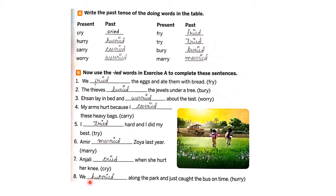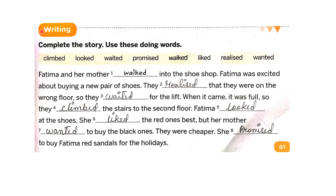Number eight: we ___ along the park and just caught the bus on time — 'hurry,' so we write 'hurried.' Now let's read the completed sentences: one, we fried the eggs and ate them with bread; two, the thieves buried the jewels under a tree; three, Ishan lay in bed and worried about the test; four, my arms hurt because I carried these heavy bags; five, I tried hard and I did my best; six, Amir married Joya last year; seven, Anjali cried when she hurt her knee; eight, we hurried along the park and just caught the bus on time.